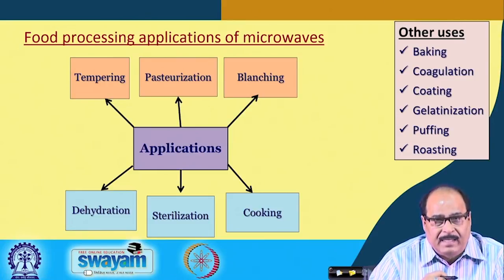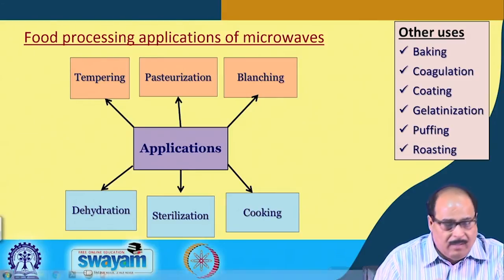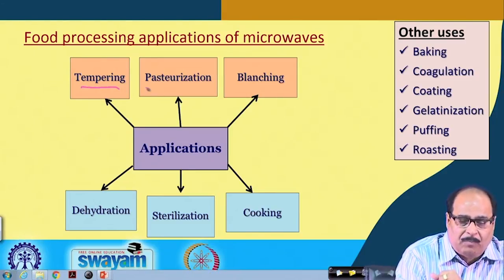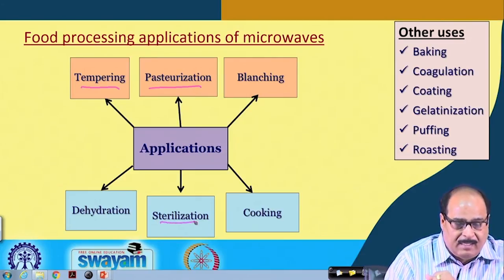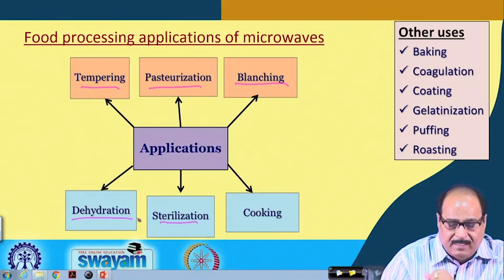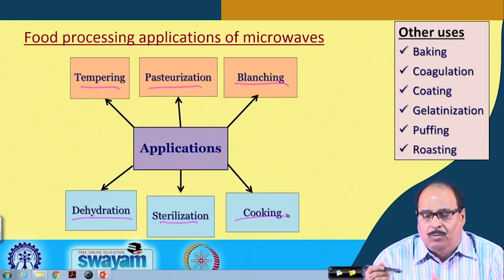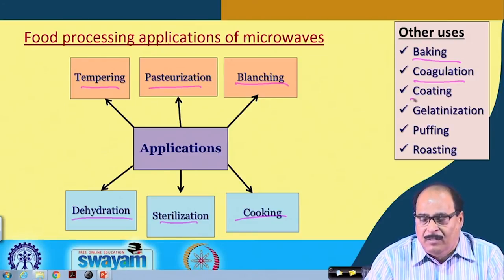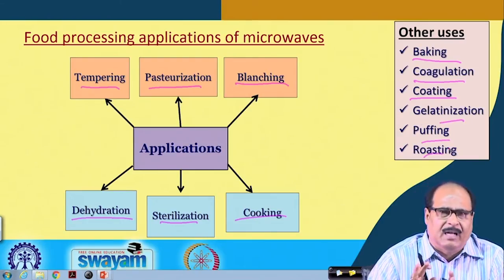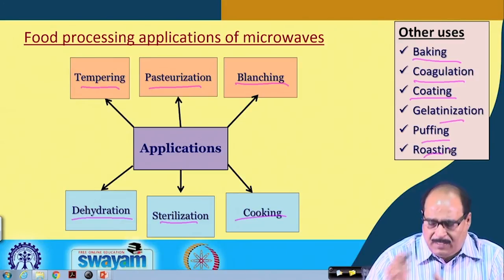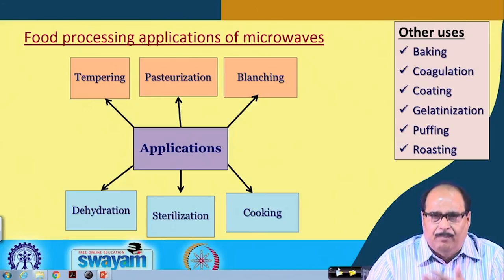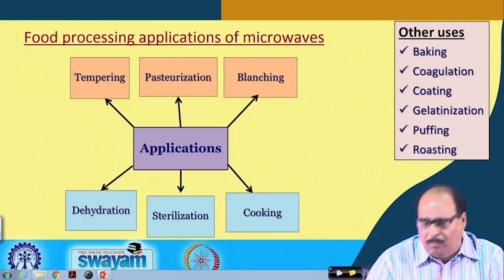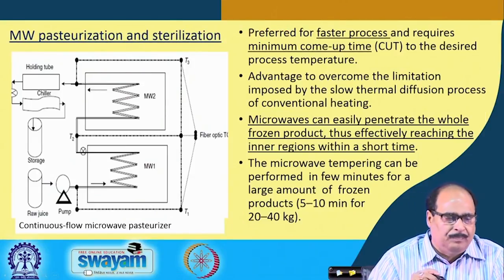Regarding food processing applications of microwaves, they can be used for tempering, pasteurization, sterilization, blanching, dehydration, cooking, baking, coagulation, improving functionalities, coating, gelatinization, puffing, and roasting. For a wide range of process applications — for preparation of different products or to improve their characteristics and increase shelf life — microwaves can be used. Whatever process where heat is used, microwaves can also be applied, but with different objectives.